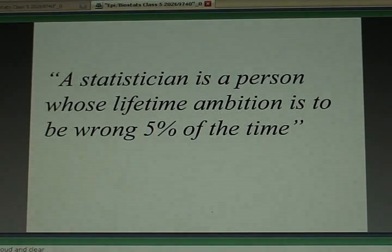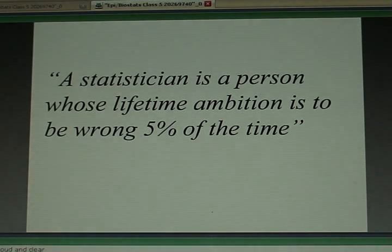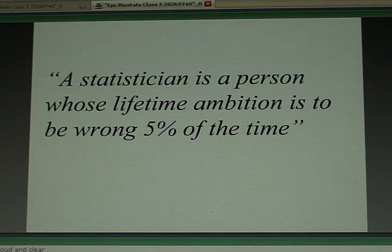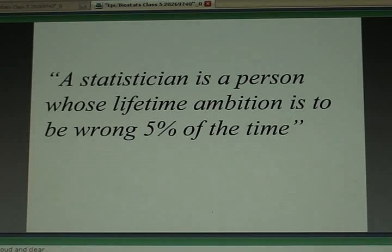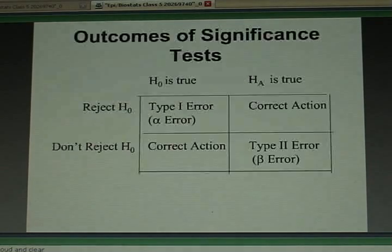Because when you declare something statistically significant because of p-value, something we'll define in a few minutes, less than 0.05, and that's what's typically done by everybody, realize that you are potentially making mistakes by calling it statistically significant when the null hypothesis is really true.